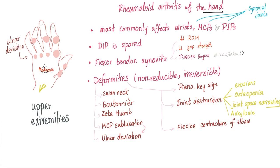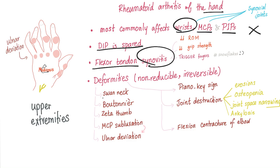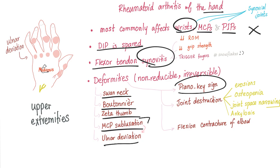Rheumatoid arthritis of the hand most commonly affects the wrist, MCP, and PIP joints, but not the DIP — the DIP is spared. There is flexor tendon synovitis. Deformities include swan neck deformity, Z-thumb deformity, MCP subluxation which can lead to ulnar deviation, piano key sign, and joint destruction.